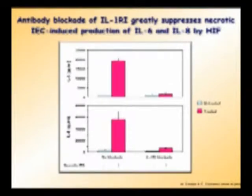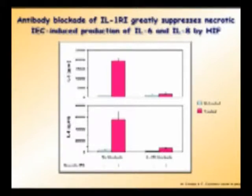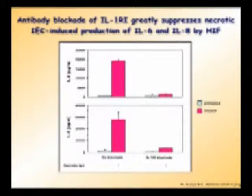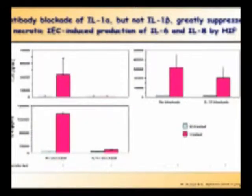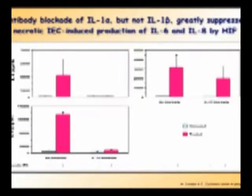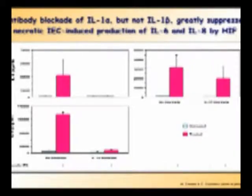We thought that perhaps IL-1α was involved. IL-1α is a member of the interleukin-1 family — now about 12 members — and is a very powerful pro-inflammatory cytokine that is never secreted; it is either intracellular or bound to the surface, unlike IL-1β which is released into the environment. When we blocked the interleukin-1 receptor we eliminated the response, implicating an IL-1 family member. Then we specifically asked about IL-1α versus IL-1β: blocking IL-1α, but not IL-1β, essentially eliminated the response, strongly suggesting that intracellular IL-1α was the DAMP causing the inflammatory response by fibroblasts.